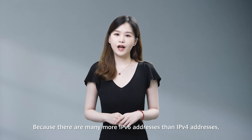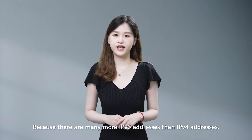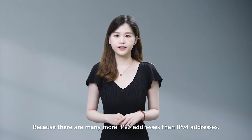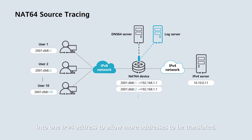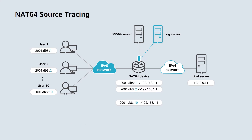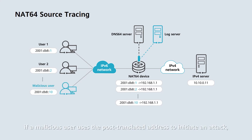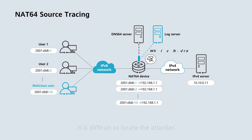Because there are many more IPv6 addresses than IPv4 addresses, multiple IPv6 addresses are usually translated into one IPv4 address to allow more addresses to be translated. In this case, if a malicious user uses the post-translated address to initiate an attack, it's difficult to locate the attacker.